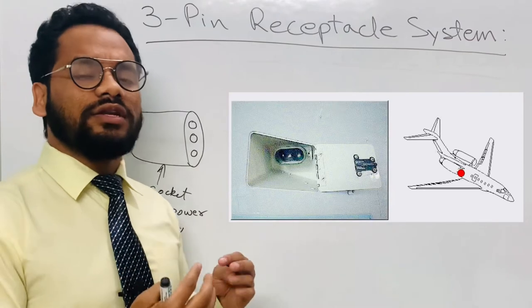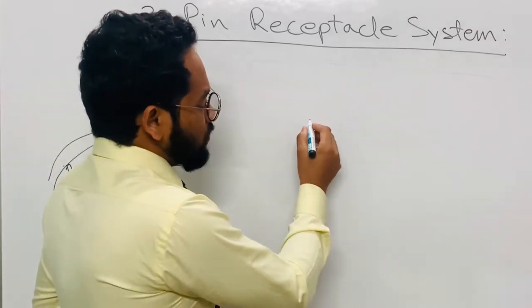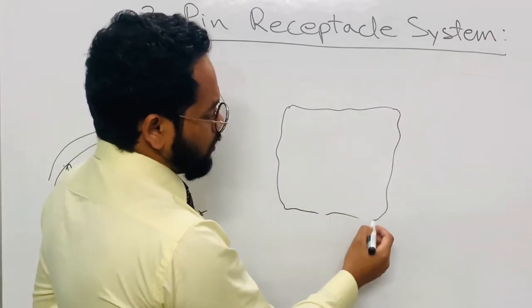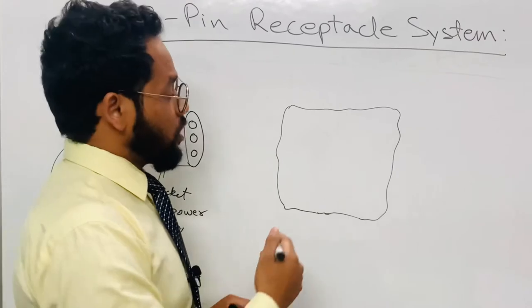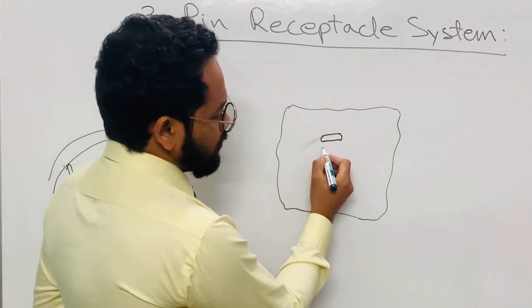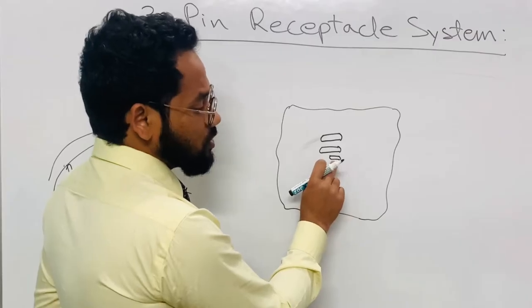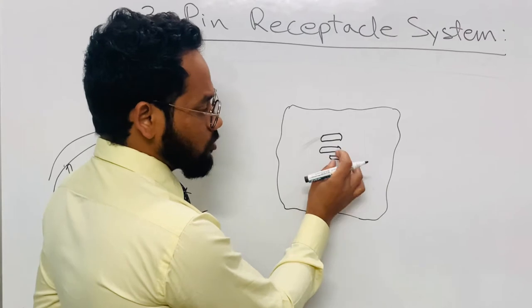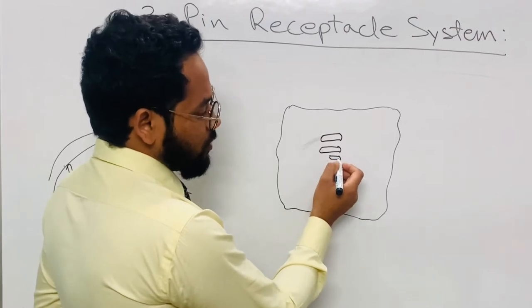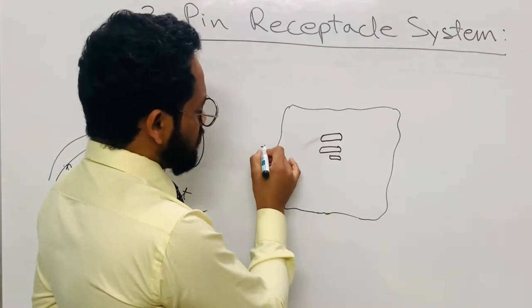This external power supply socket fits into a plug which is mounted on the aircraft structure at a suitable location. Generally it is mounted near the nose section of the fuselage towards its belly location. The plug has three pins: first pin, second pin, and third pin. This third pin is small in size — its length is small and its diameter is relatively smaller compared to the other pins.